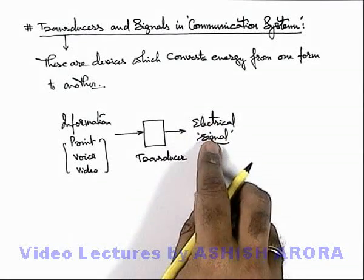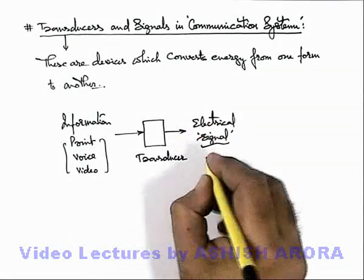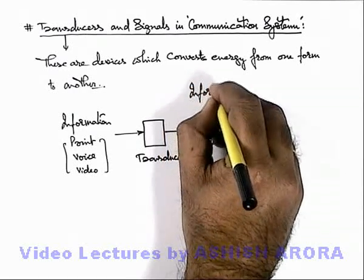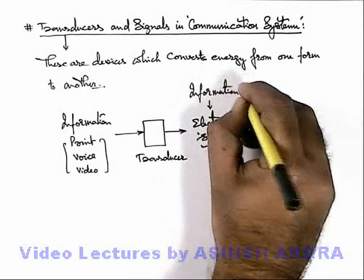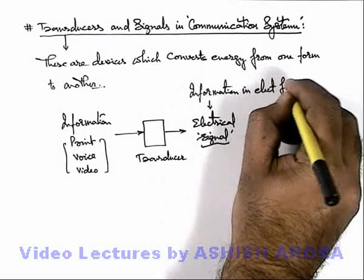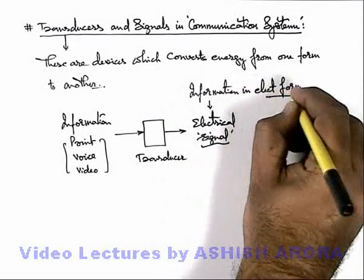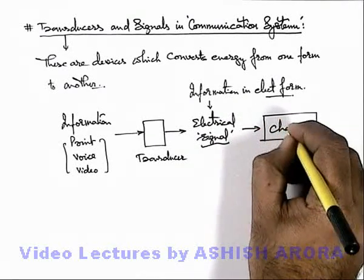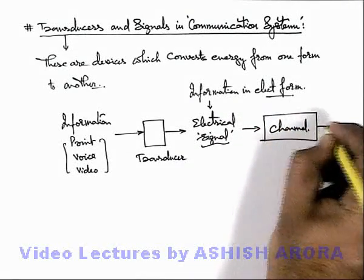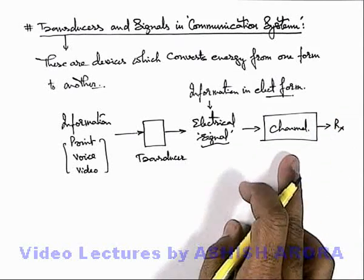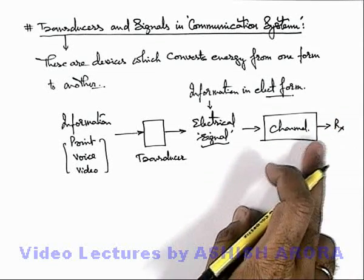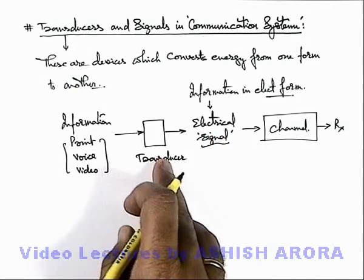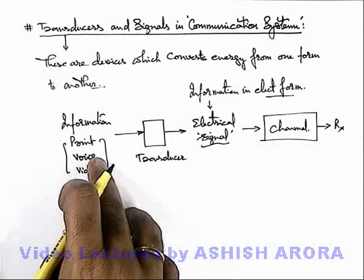A signal is an electrical form of information. This electrical signal is further submitted to the channel, which can be transmitted to the receiver. Finally, the receiver can supply the electrical signal to another transducer, which converts this electrical signal into an understandable form.